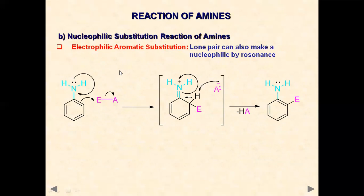The lone pair of amines can also make a carbon nucleophilic by resonance. When the lone pair shifts onto the ring carbon, the pi electrons behave as a nucleophile — that carbon becomes a nucleophile that attacks an electrophile, displacing the leaving group. This reaction also temporarily disrupts aromaticity, but the leaving group extracts a proton to restore the substituted aromatic amine.